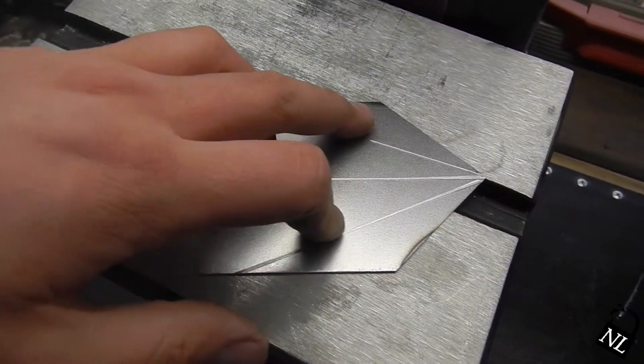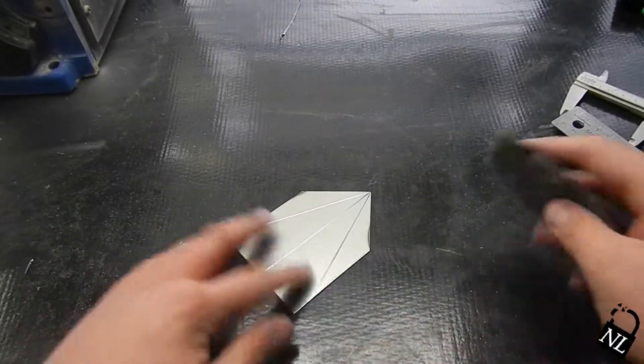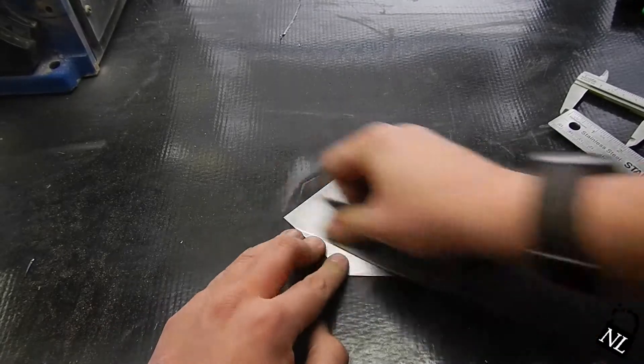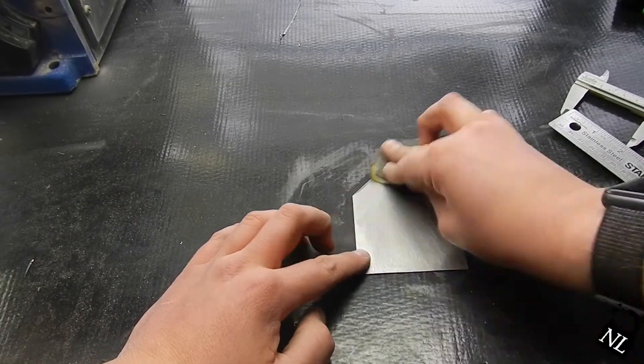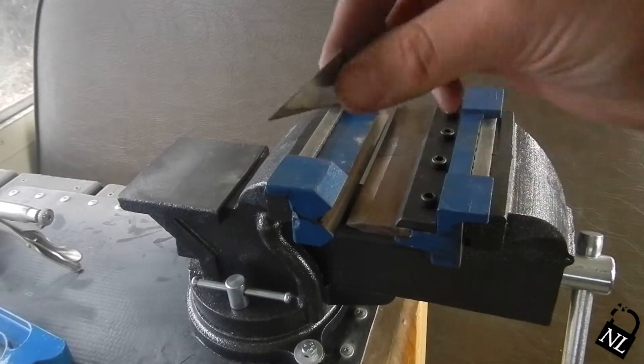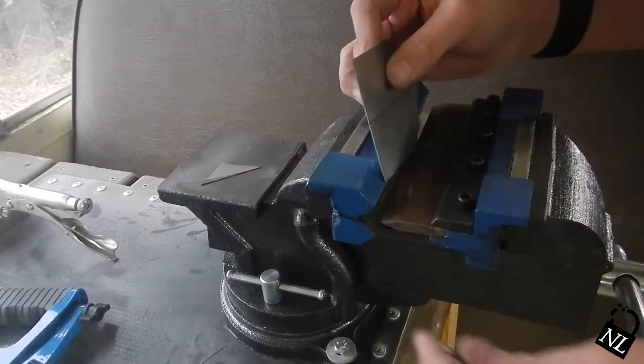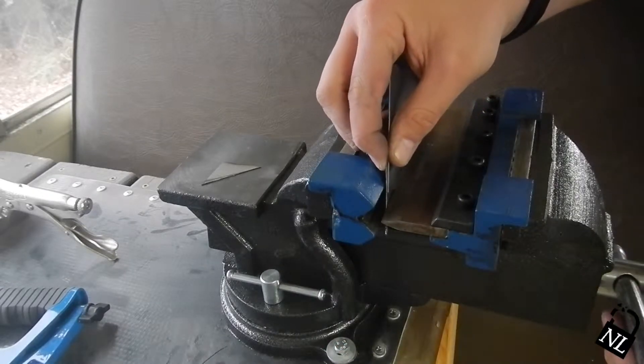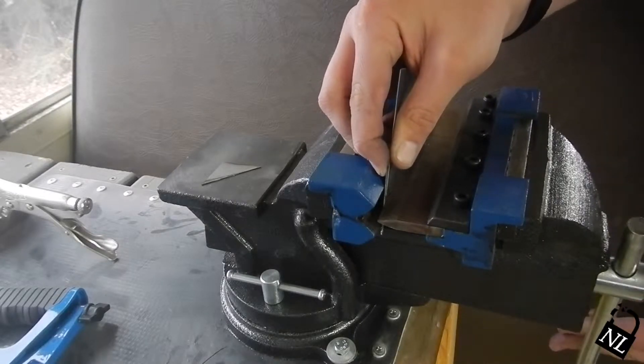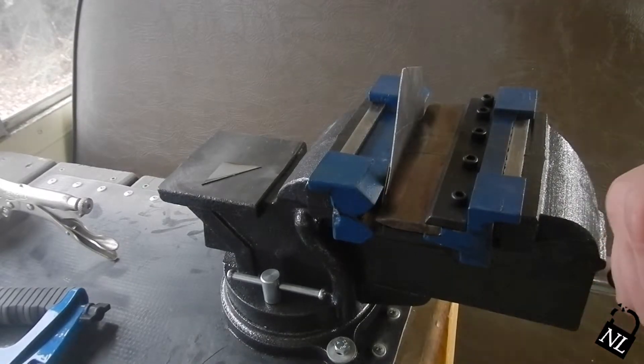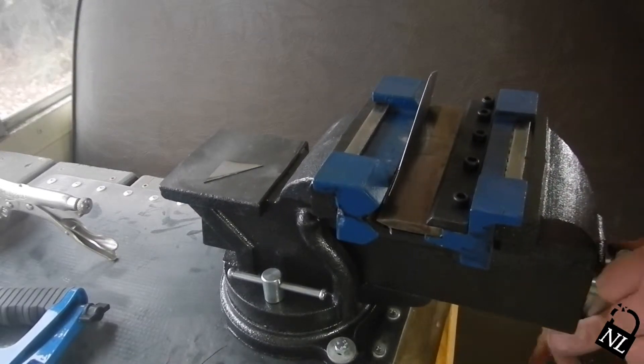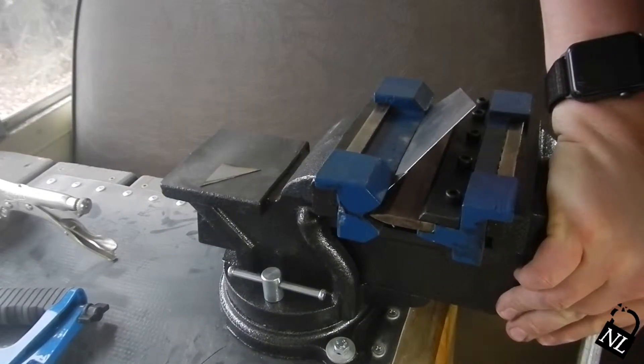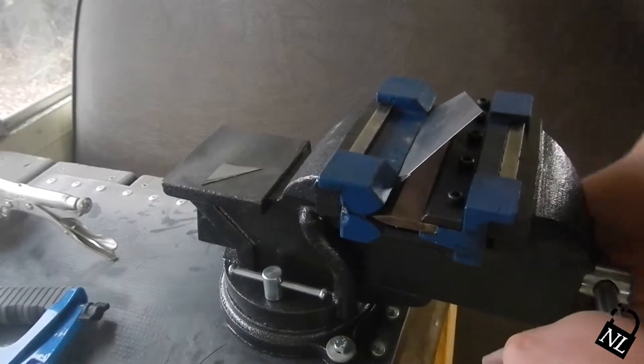Right now I'm going to sand off these burn marks. I'm using 600 grit. Then I took the two pieces that I cut off earlier. I'm going to use them to protect part of the fold. So now you just tighten and fold the sheet metal over. This is only folded at 90 degrees.